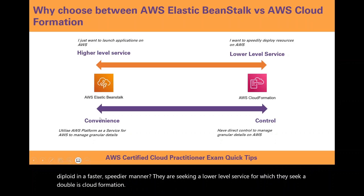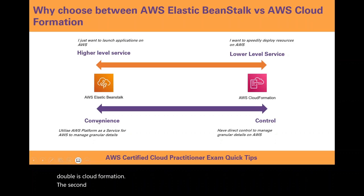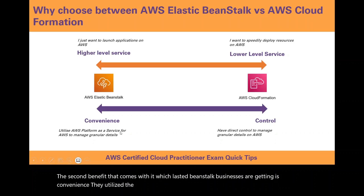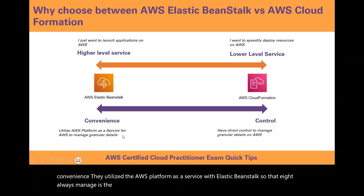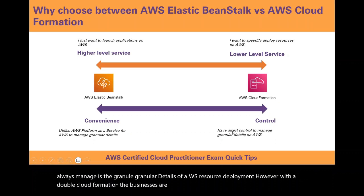The second benefit that comes with AWS Elastic Beanstalk is convenience. Businesses utilize the AWS platform as a service with Elastic Beanstalk so that AWS manages the granular details of resource deployment. However, with AWS CloudFormation, businesses are seeking greater and direct control to manage the granular details on AWS.